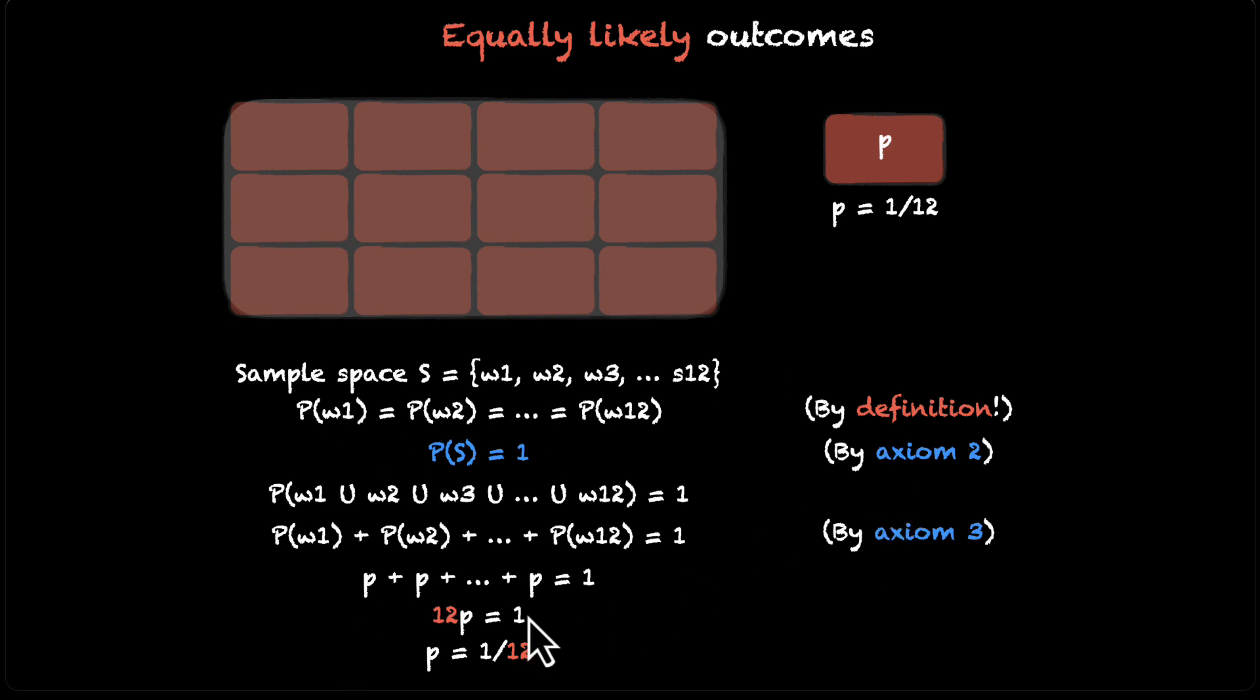And by the way, there is nothing special about this number 12. We can generalize this. In general, for n equally likely outcomes, if there were n such events which were mutually exclusive and exhaustive, we can say that the probability of each of them would be equal to 1 by n. This is the probability for every single one of them.